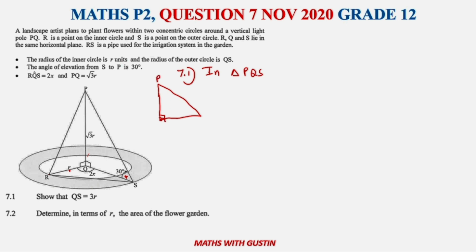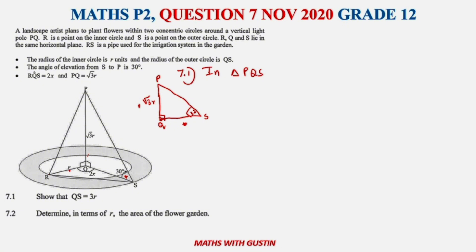In triangle PQS we have P at the top, Q at the bottom — it is a right-angle triangle — with PQ equal to √3r and the angle at P equal to 30 degrees. QS is unknown and PS is also unknown, but they want us to find QS. QS is opposite and PQ is adjacent. We know from SOHCAHTOA that we use tangent here.